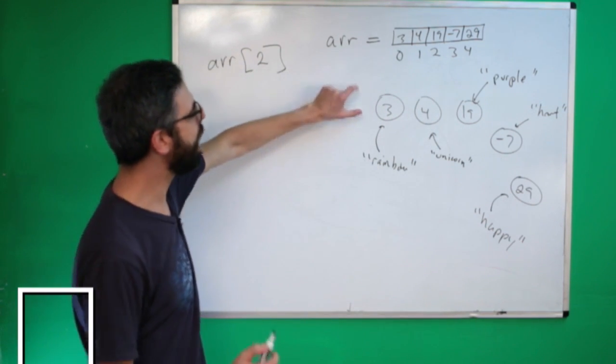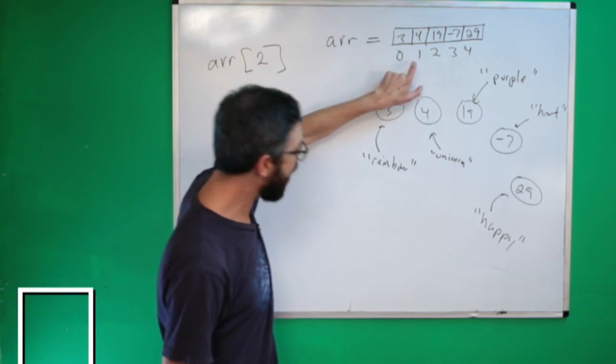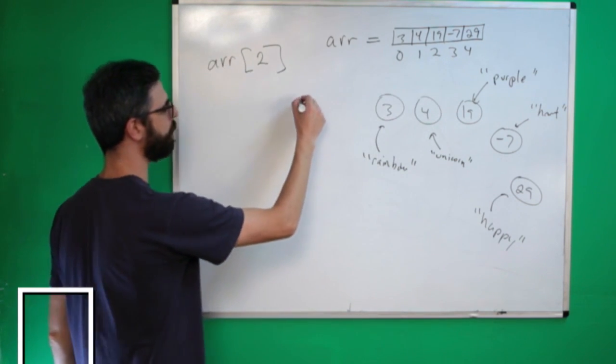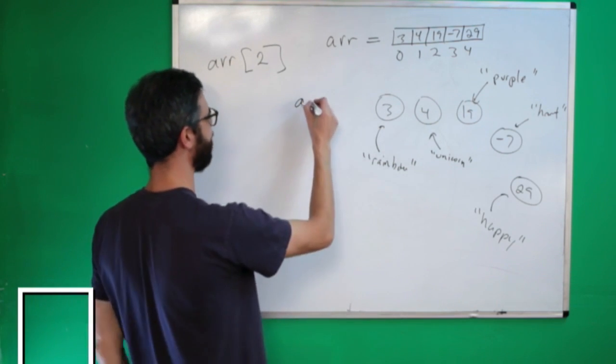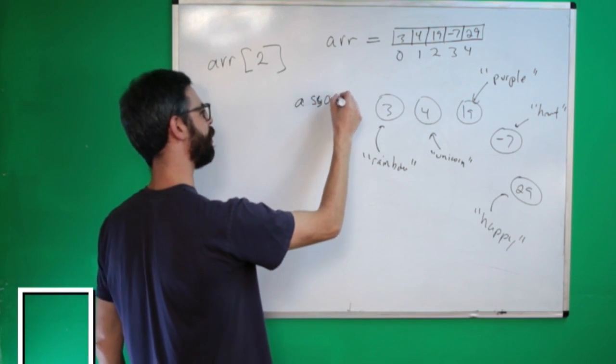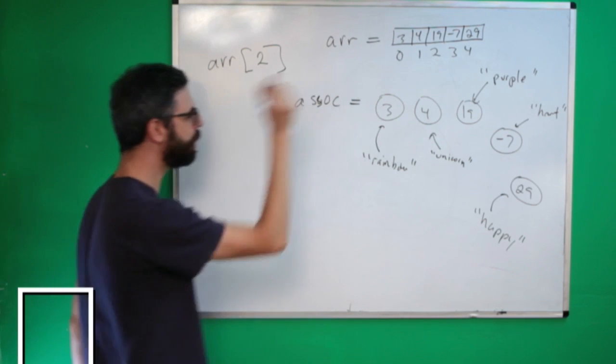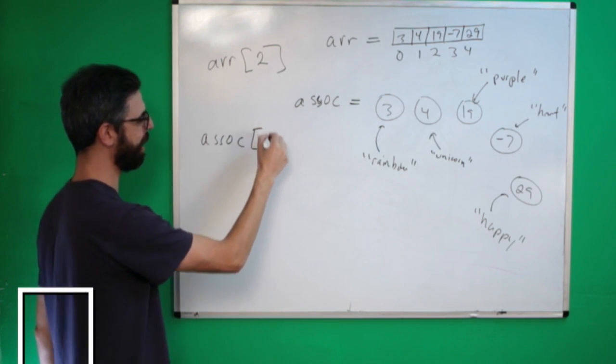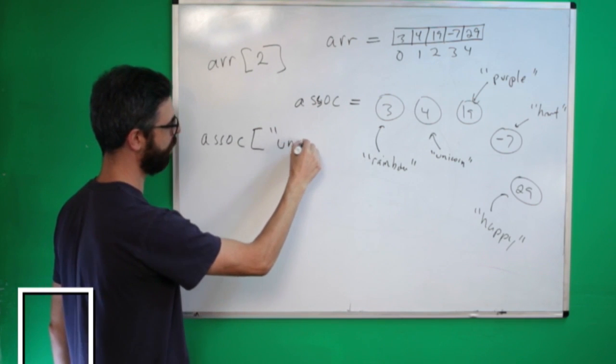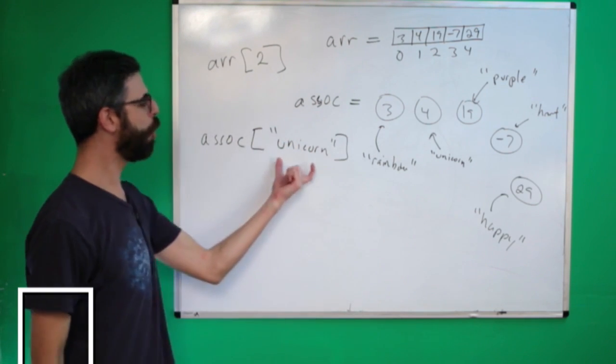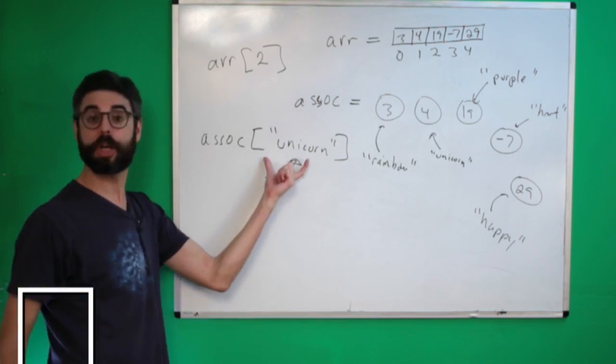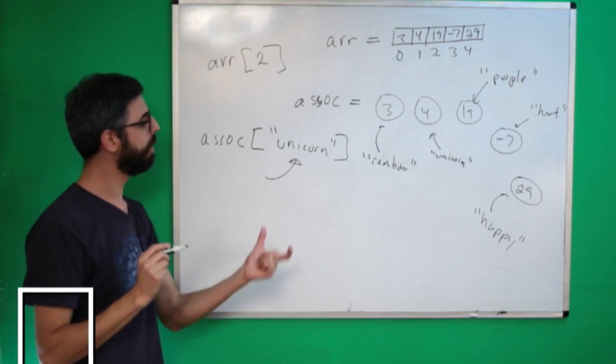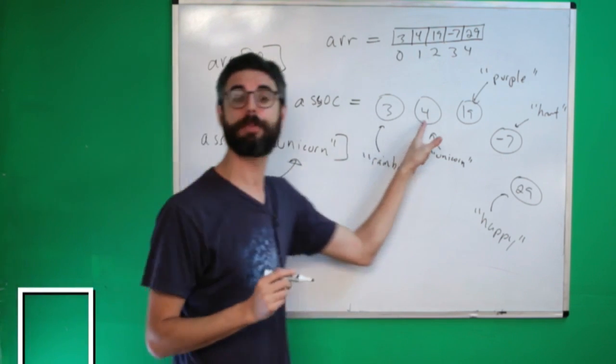Happy little associative array, for all of you who keep wanting me to make Bob Ross references. So, this is the idea. What if I could, instead of having an ordered list with indexes, what if I could name all these elements? And so, if this is my associative array, I'm going to write asoc. My associative array, I would say associative index unicorn. So, I could put the name in the square brackets to indicate that's how I want to look up this particular value.